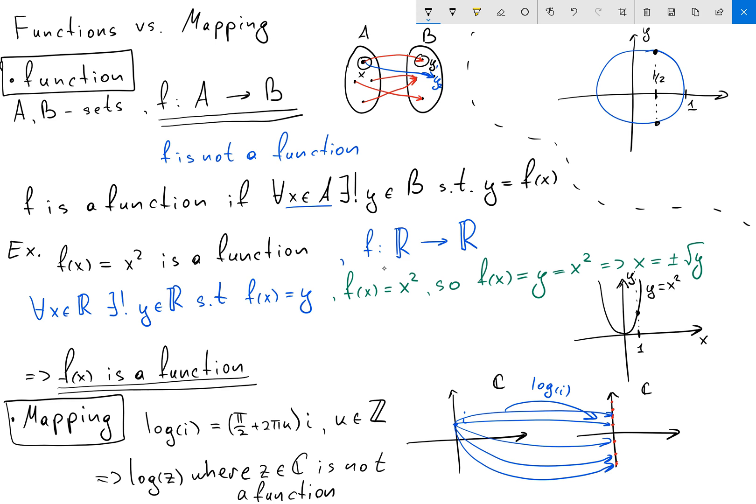So this element is not a function. So we have a function if and only if for every possible vertical line, our vertical line is going to intersect our graph only in one point.